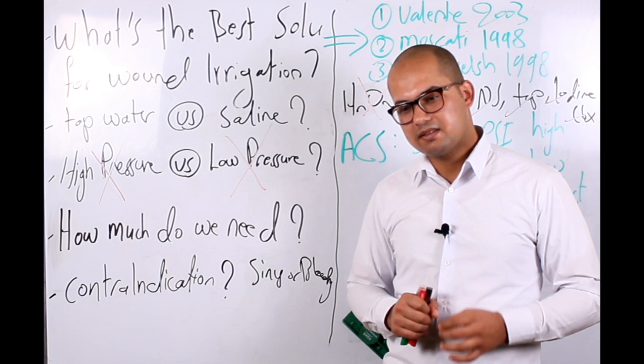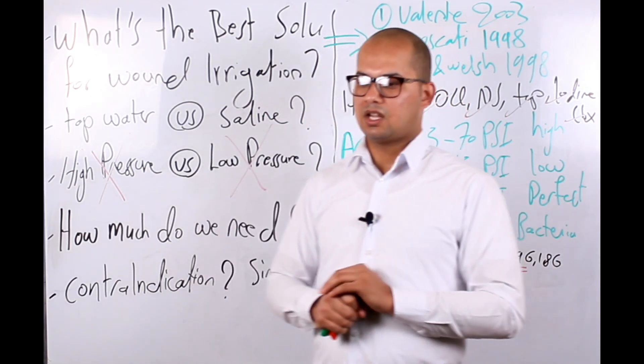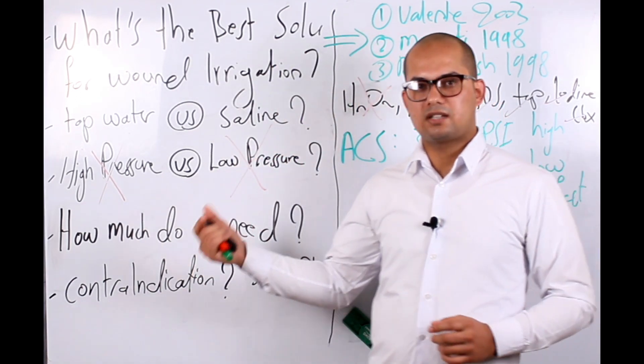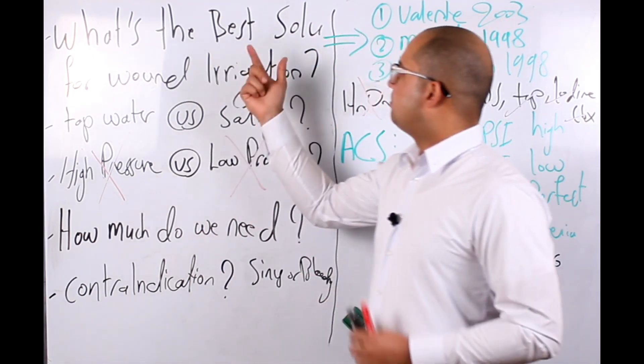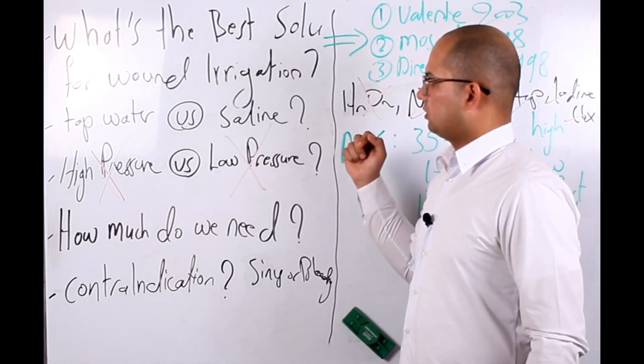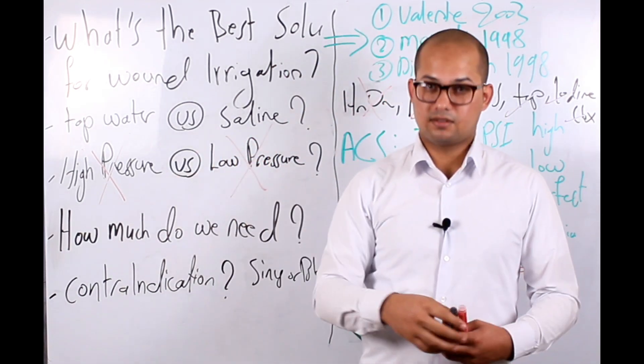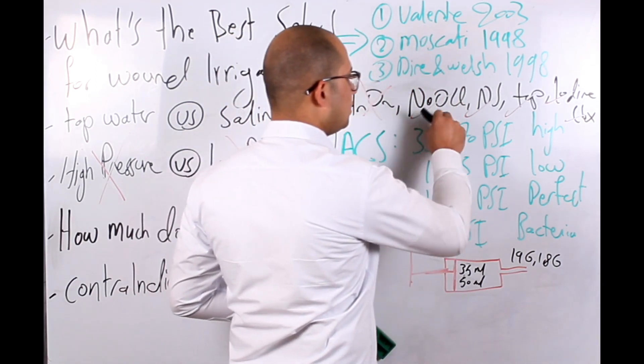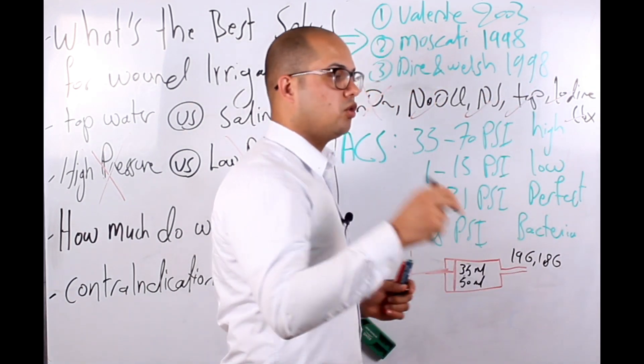Now I'm going to highlight a few common malpractices that we did every day. What's the best solution for wound irrigation? You may ask yourself. We have a lot of irrigants in the market including hydrogen peroxide, sodium hypochlorite, normal saline, tap water, iodine, chlorhexidine. Which one is better?